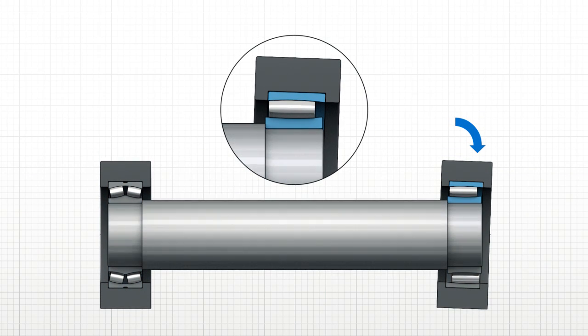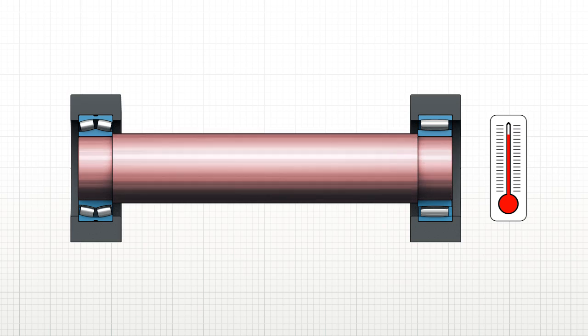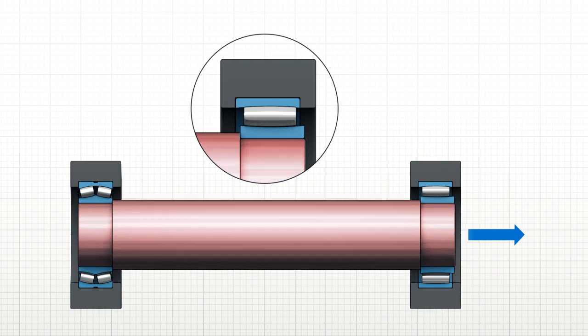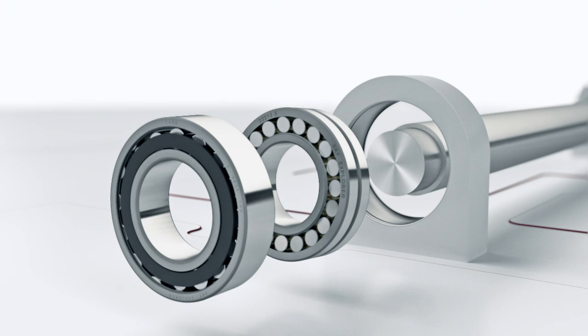It is capable of accommodating misalignment, allows frictionless axial displacement and prevents fretting corrosion. The CARB bearing is interchangeable with a spherical roller bearing.